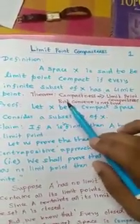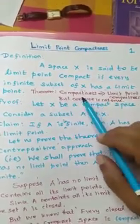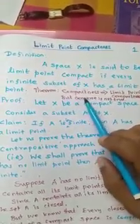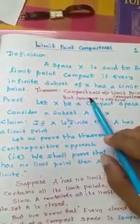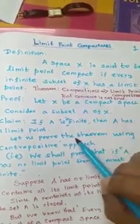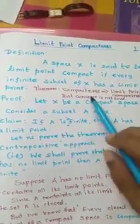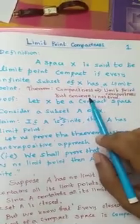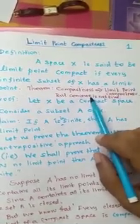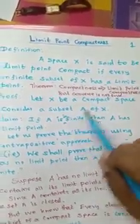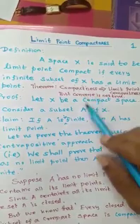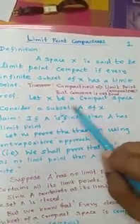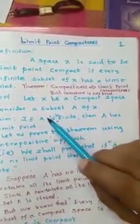Now we are going to derive the theorem: compactness implies limit point compactness, but limit point compactness does not imply compactness. The converse part of the theorem can be proved by giving a counter example. Now let us prove the first part of the theorem — for that we take a compact space X.